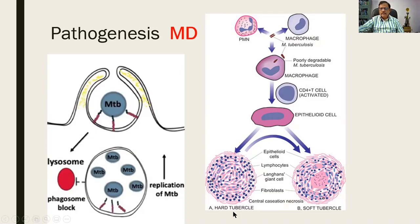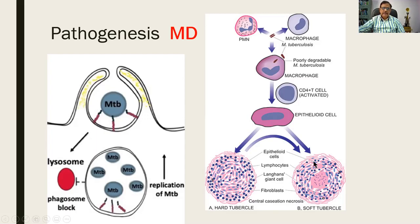A granuloma in tuberculosis is called a tubercle. If there is no central necrosis it is called a hard tubercle; later there can be softening and necrosis, giving a soft tubercle or necrotizing granuloma. The structure includes epithelioid cells, lymphocytes trimmed by fibroblasts, central necrosis, and a giant cell. This is the evolution of a granuloma — please remember this.